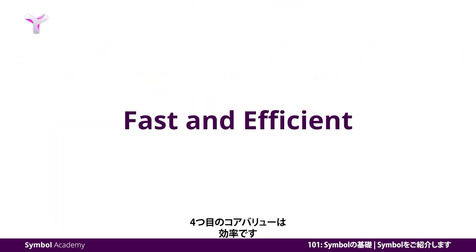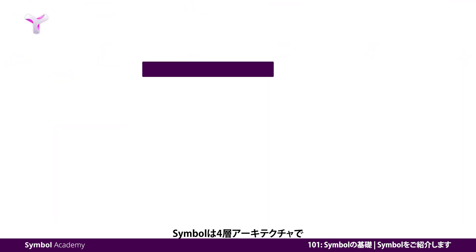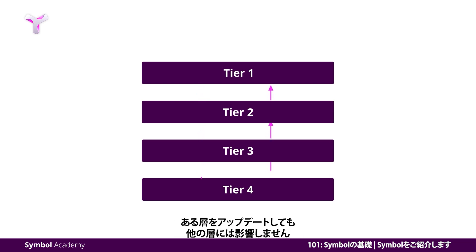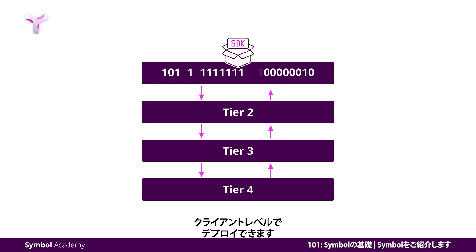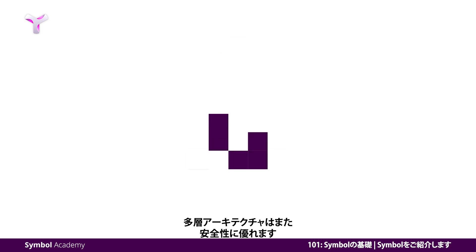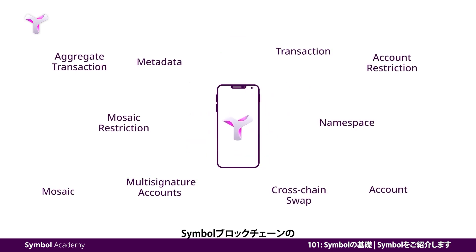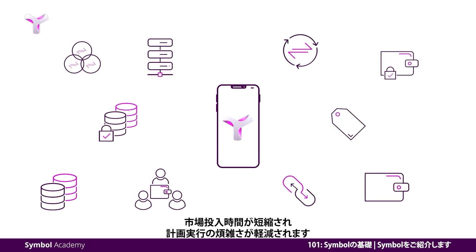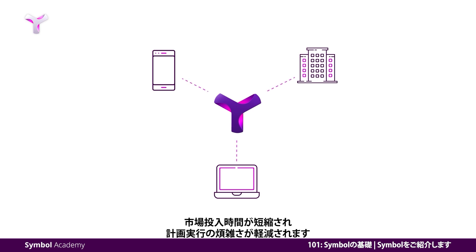The fourth core value is efficiency. Symbol uses a four-tier architecture that keeps each tier free from disturbing one another. It also allows developers to update any tier without disrupting the other tiers. For example, an SDK can be easily deployed at the client level. Having tiered architecture also provides more security for every user. The flexibility of the architecture and the built-in features available in Symbol blockchain reduces the time to market and reduces the complexity of implementation.